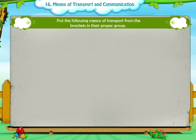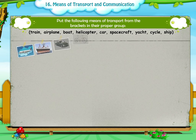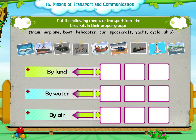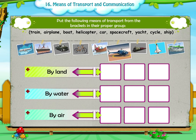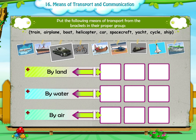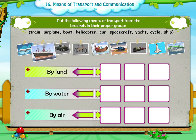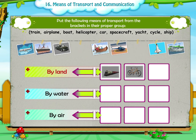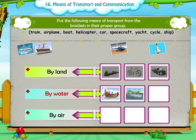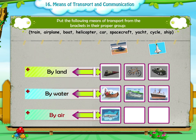Activity Five: Put the following means of transport from the brackets in their proper group. The options are train, airplane, boat, helicopter, car, spacecraft, yacht, cycle, and ship. By land: train, cycle, car. By water: boat, yacht, ship. By air: airplane, helicopter, spacecraft.